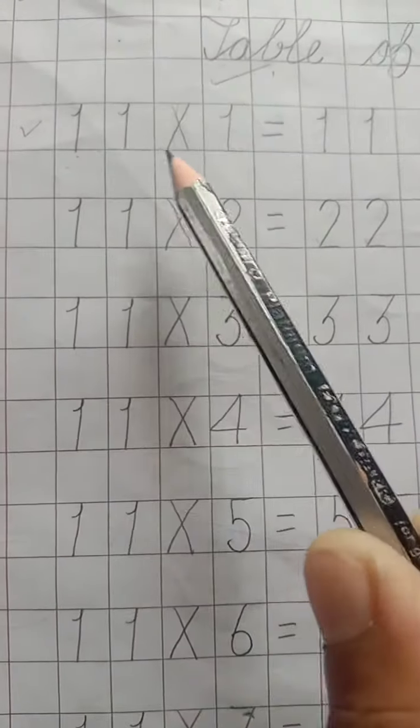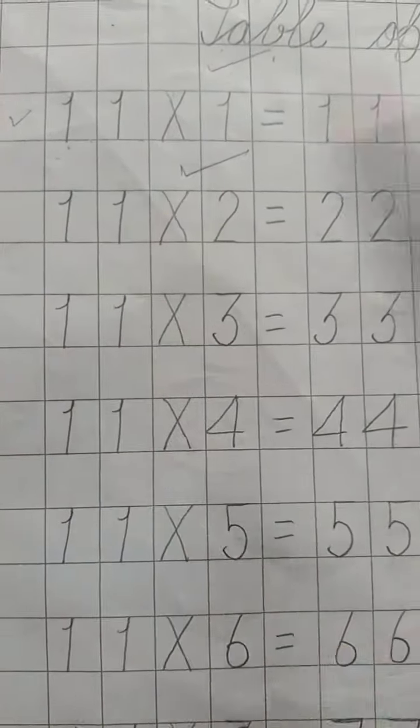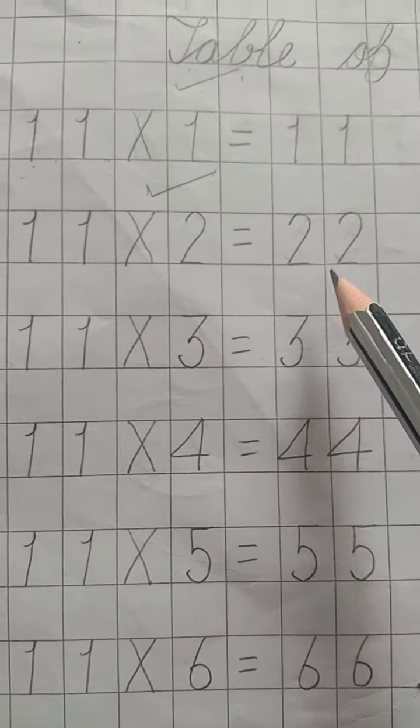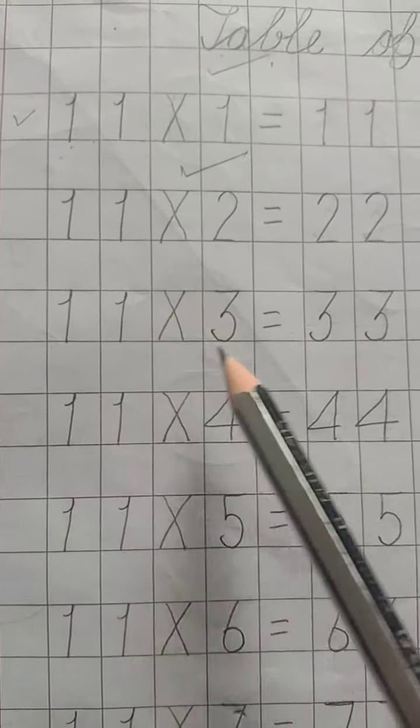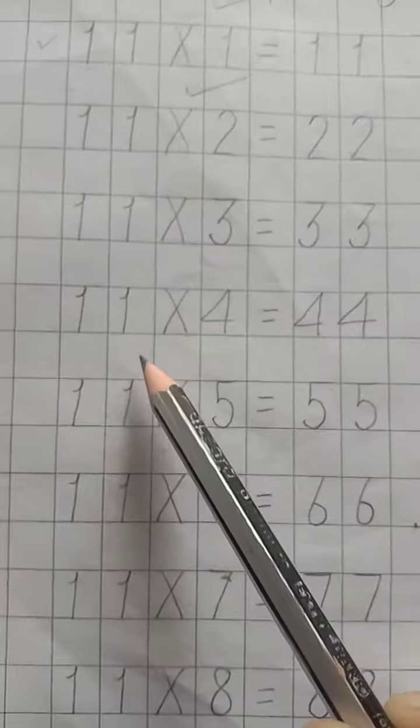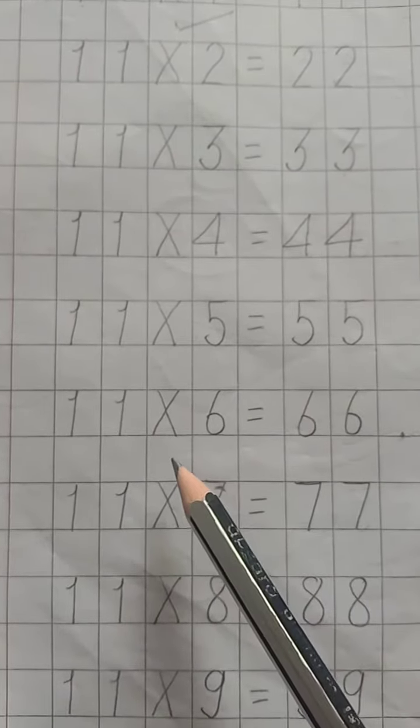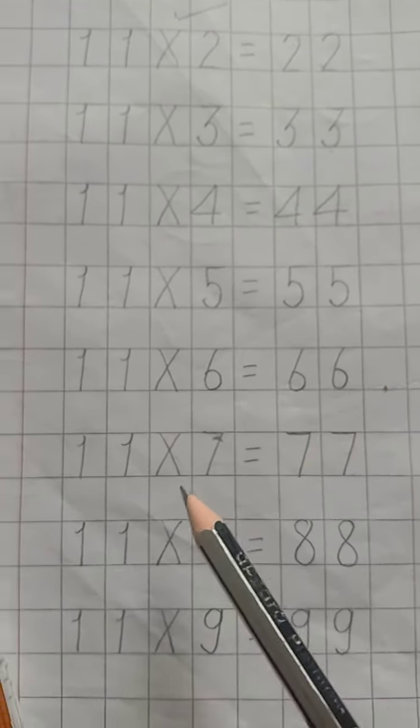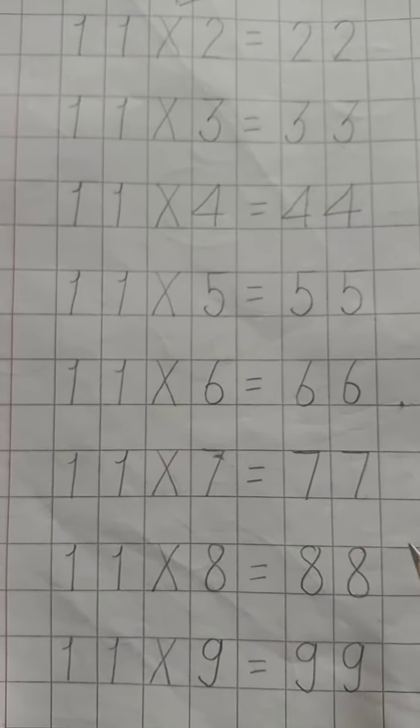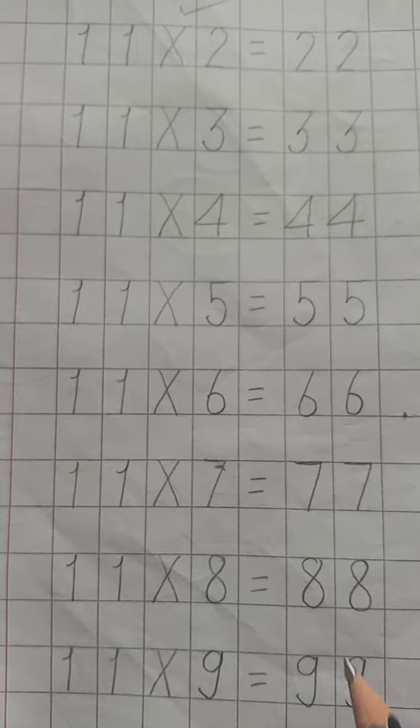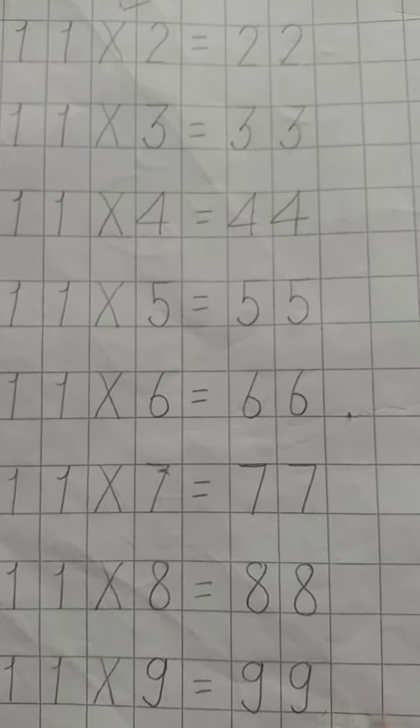In the next box, 11 times 2 equals 22. 11 times 3 equals 33. 11 times 4 equals 44. 11 times 5 equals 55. 11 times 6 equals 66. 11 times 7 equals 77. 11 times 8 equals 88. 11 times 9 equals 99.